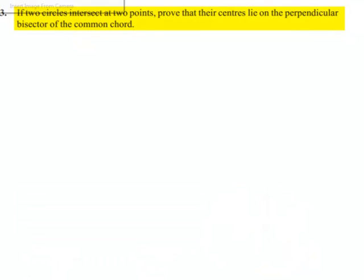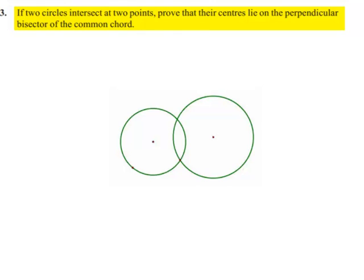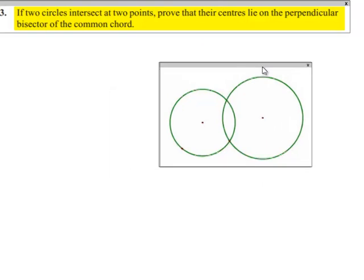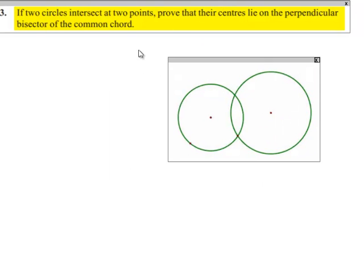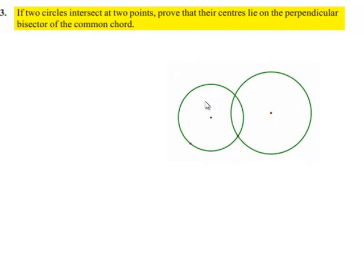Moving on to the solution, let us consider two circles as shown in the figure. Let the centers be O and O', and they intersect at the common points A and B. AB will be their common chord.